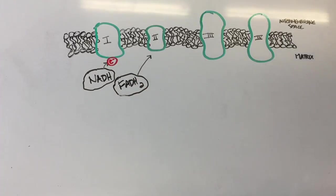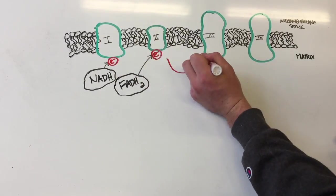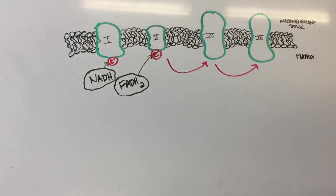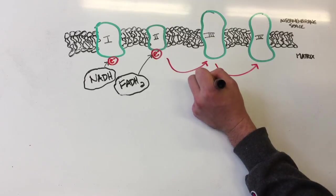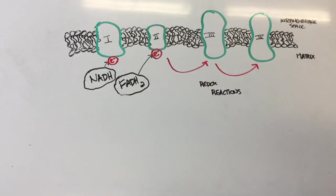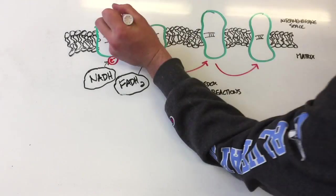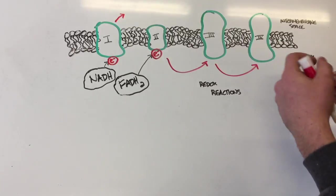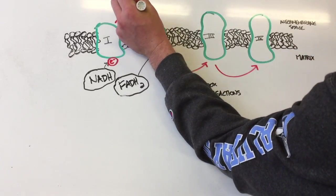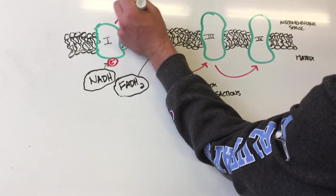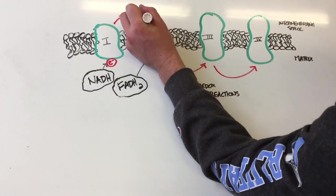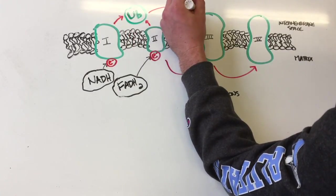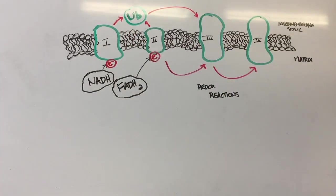The electrons then travel down the electron transport chain through a series of redox reactions. However, a transport molecule is necessary because the complexes are stationary. The first transport molecule is ubiquinone. Ubiquinone takes the electrons from complexes 1 and 2 to complex 3.